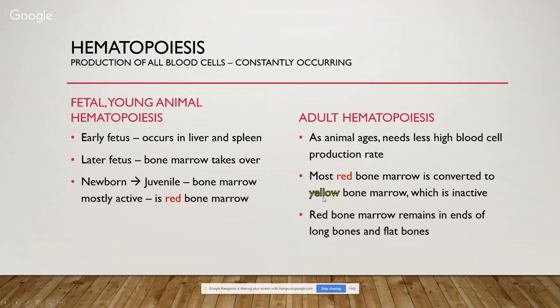Hematopoiesis is the production of all blood cells, and it is constantly occurring. Within the fetus, hematopoiesis occurs in the liver and the spleen in early development, and as the fetus develops, bone marrow starts to take over. With a newborn or juvenile up to about one to one and a half years, the bone marrow is mostly active red bone marrow. As the animal ages and needs less blood cell production, that red bone marrow is converted to yellow bone marrow, which is inactive. Red bone marrow remains in the ends of the long bones and flat bones, and if it is reactivated, it will go from yellow to red because it's becoming more active.